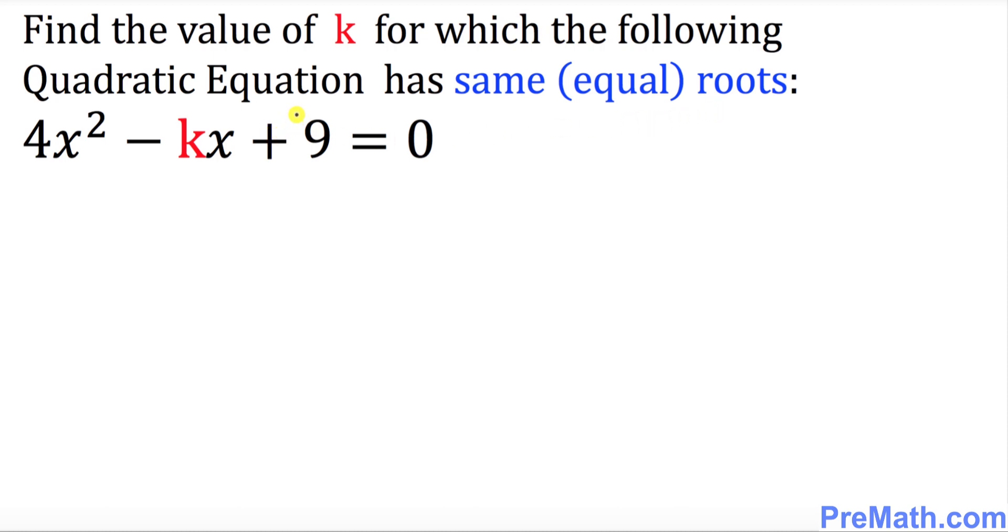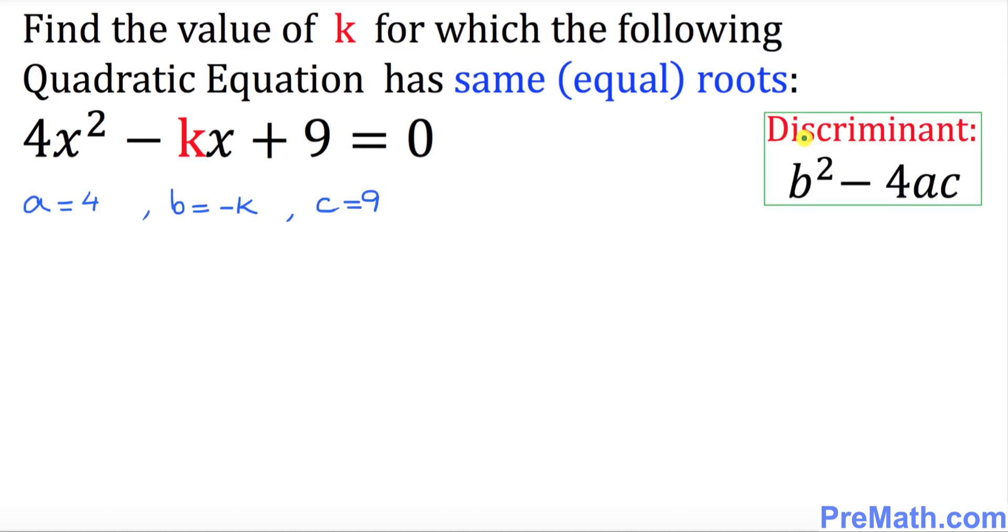So the very first thing we need to do is a discriminant, which is always b squared minus 4 times ac. This is called discriminant, and in our case a equals 4, b equals negative k, and c equals positive 9.